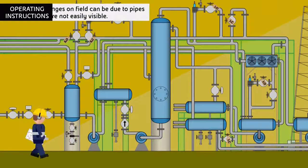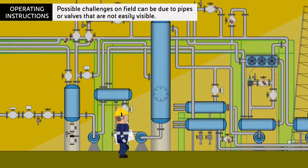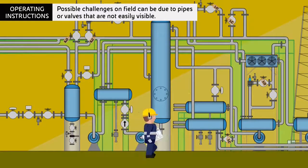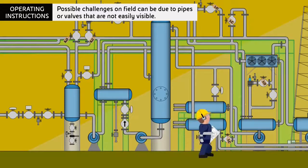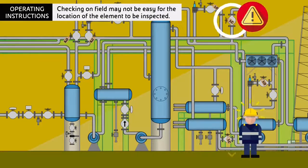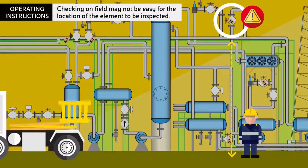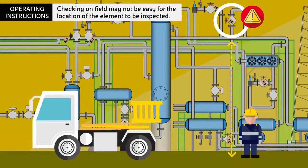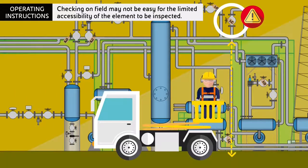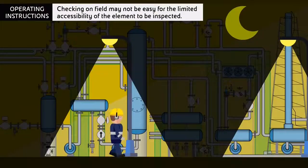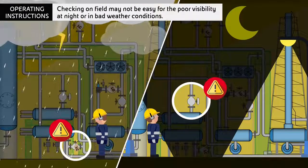Always keep in mind that possible challenges on field can be due to pipes or valves that are not easily visible. Checking on the field may not be easy due to the location of the element to be inspected, its limited accessibility, or poor visibility at night or in bad weather conditions.